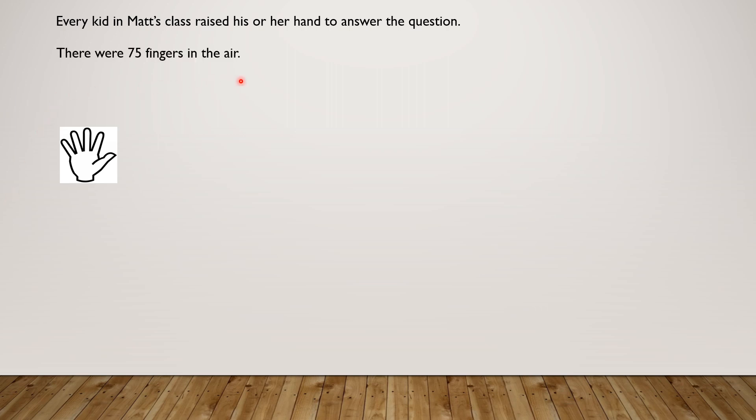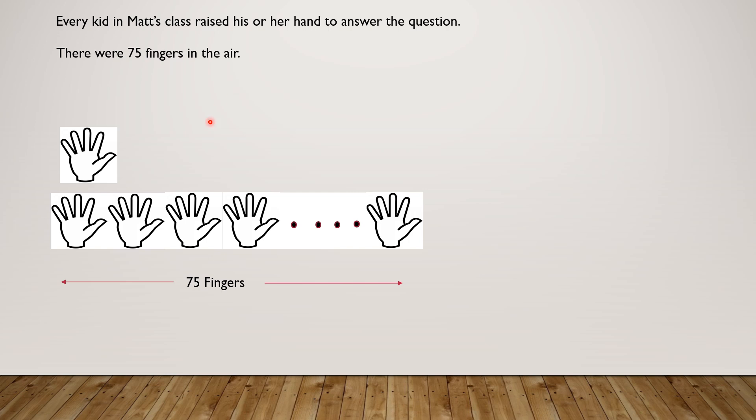There were 75 fingers in the air. So let's say these are 75 fingers. How many kids were in Matt's class? We will divide 75 in groups of five to get the answer.